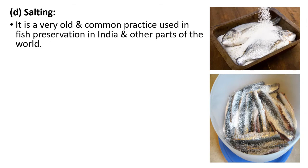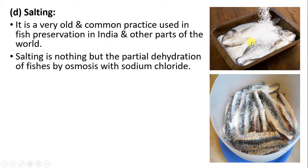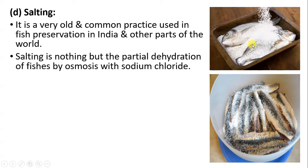The next method is salting. It is a very old and common practice where fish can be preserved using salt, practiced in India and other parts of the world. When salt is used, partial dehydration of the fish takes place — the movement of water molecules is from the fish into the environment, reducing the water content of the fish. As water content decreases, the decomposition process also slows down. Sodium chloride is used to dehydrate the fish.